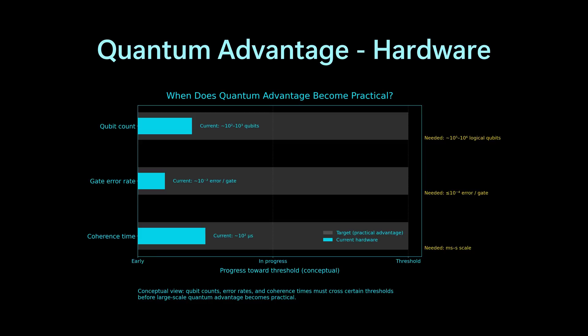Although there are many recent advances, which are nothing short of amazing, logical qubit count needs to increase by 3 orders of magnitude, error rates need to fall by 2 orders of magnitude, and coherence time needs to improve by 4 orders of magnitude.